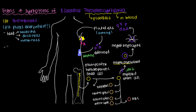Platelet plugs also predominantly accumulate in the hands and feet. For example, in a hand, platelets can clot in the small arteries and make it difficult for blood to flow from the arterial to the venous side, so oxygenated blood can't reach the tips of the fingers or toes. This can manifest as numbness or even a burning sensation.